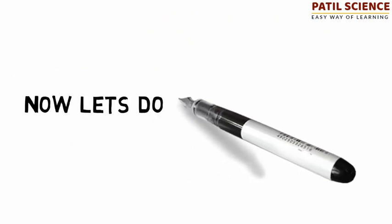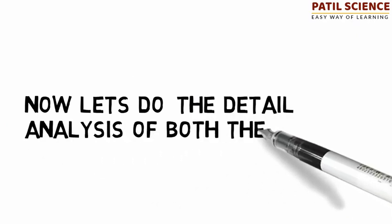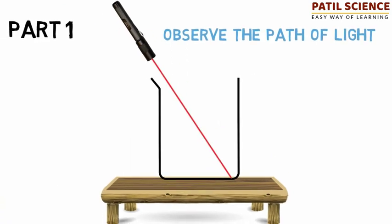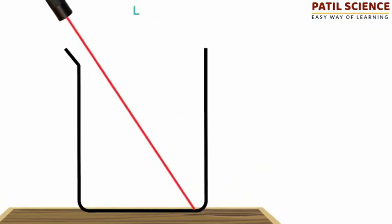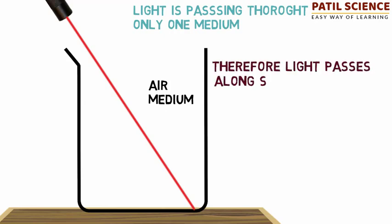Now let's do the detailed analysis of both the parts. In part one, light is passing through only one medium, i.e. air medium. Therefore, light passes along a straight line.